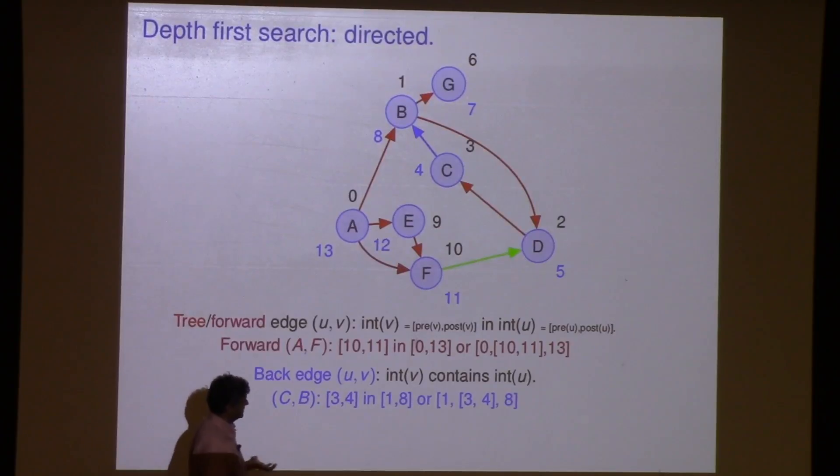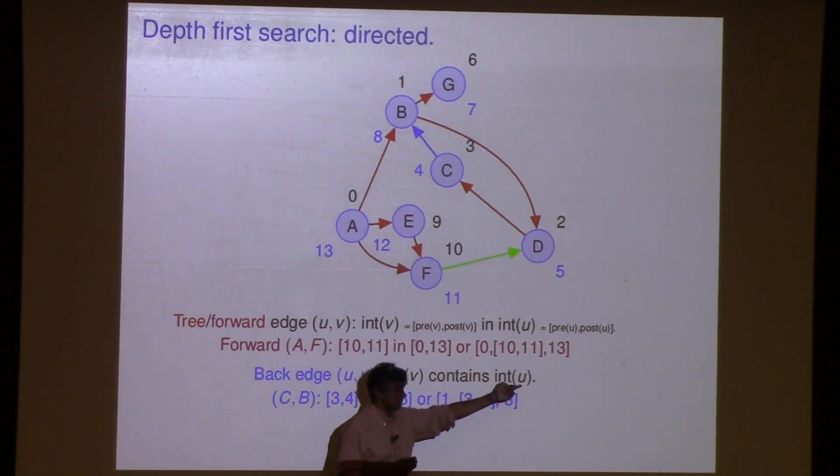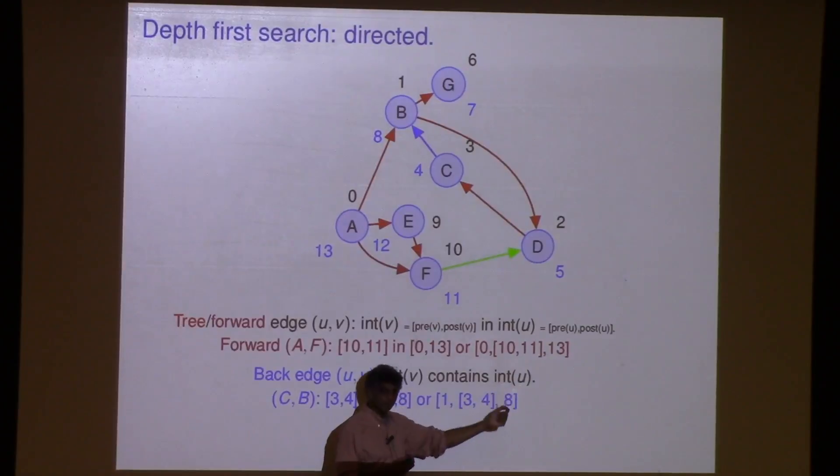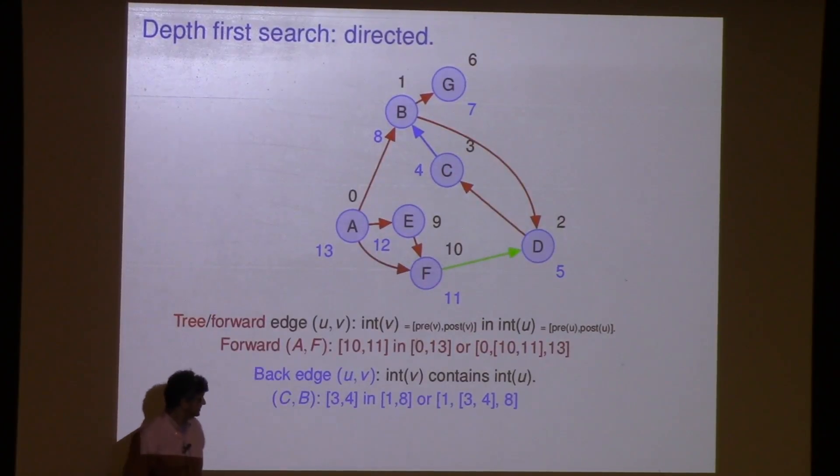So you can also check it just by using the post and preorder number. The interval, the time when V is on the stack, this interval seems all formal and stuff, but it has an intuitive meaning. It's when it's on the stack. The time when V is on the stack contains the time when U is on the stack. So U points back up to the ancestor. When U sees this edge U, V, it sees that V is on the stack.